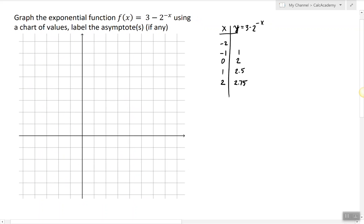At negative 2, 2 raised to the power of negative negative 2 is 4, 3 minus 4 is negative 1.